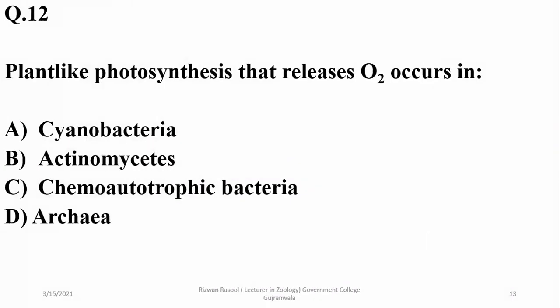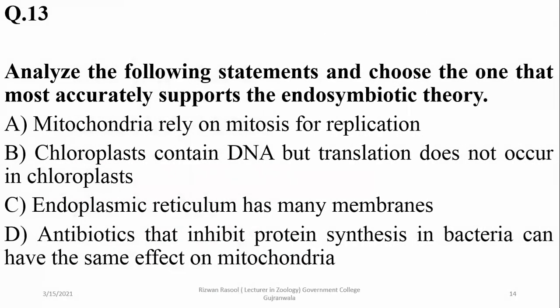Plant-like photosynthesis that releases oxygen occurs in cyanobacteria. Analyzing statements about the endosymbiotic theory: antibiotics that inhibit protein synthesis in bacteria can have the same effect on mitochondria, which makes mitochondria similar to prokaryotic or bacterial cells — this supports the endosymbiotic theory.